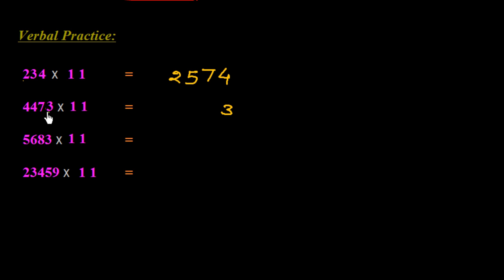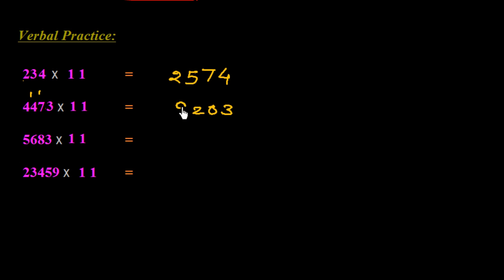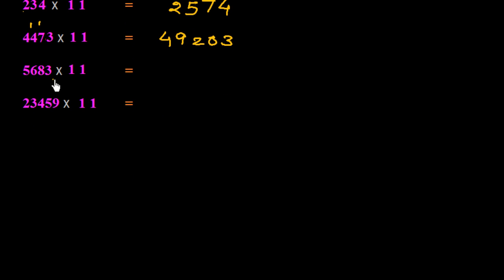For the next verbal example, we write down 3, then 7 plus 3 is 10, so we put 0 and carry 1. Then 4 plus 7 is 11, plus 1 is 12, put 2 and carry 1. Then 4 plus 4 is 8, plus 1 is 9, and the last digit is 4. So the answer is 49203.